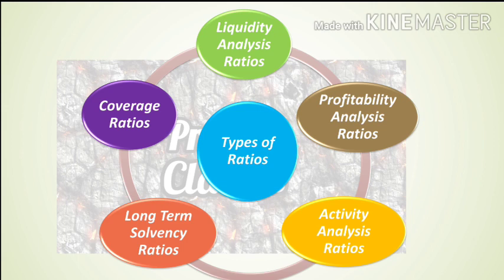So first of all: Liquidity Analysis Ratio, second Profitability Analysis Ratio, third Activity Analysis Ratio, fourth Long Term Solvency Ratio, and last Coverage Ratio — also called Interest Coverage Ratio. These are our 5 types of ratios.